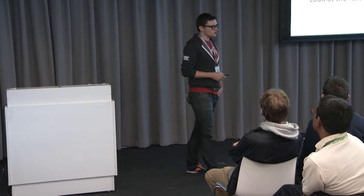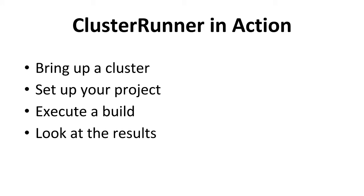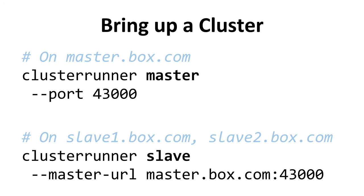I'll go through the four main steps to set up Cluster Runner: bringing up the cluster, setting up your project, executing your build, and looking at the results. Cluster Runner is all contained within a single executable — the master service and the slave service are both part of it, with no extra dependencies. You simply run 'clusterrunner master' with a port, then run 'clusterrunner slave' on all slave hosts you want to attach, pointing them at the master. This can be done manually or via a config management tool.